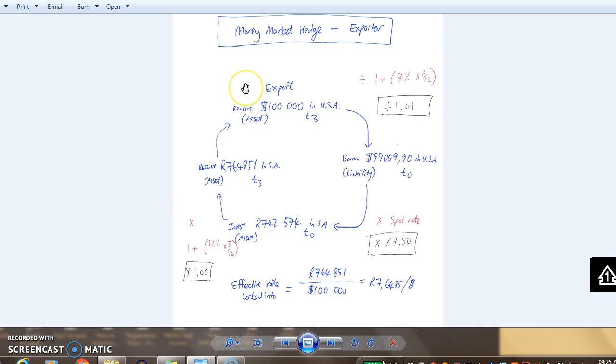What we have is an asset - the debtor or customer. We're going to receive $100,000 in three months time in US dollars. How do we hedge this? We have to create a liability of exactly $100,000 US dollars in three months time in the US.